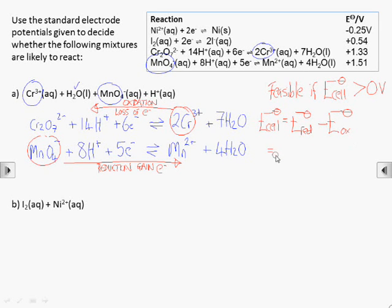Remember the cell potential is the electrode potential for the reduction minus the electrode potential for the oxidation, which in this case comes out as plus 0.18 volts, so the reaction is feasible.